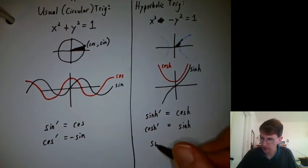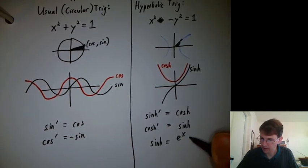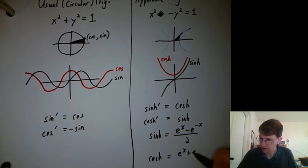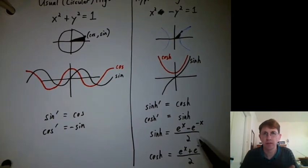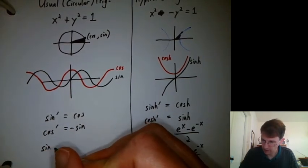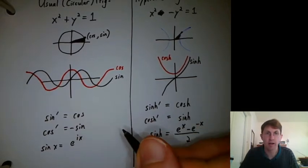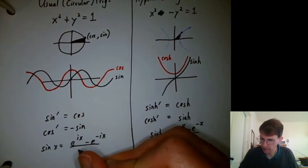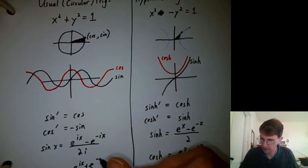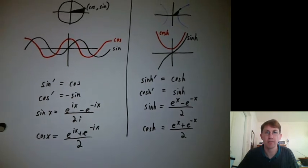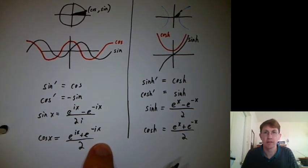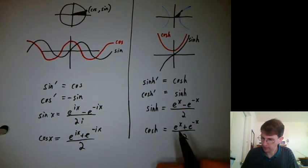Now it turns out there are nice formulas for cinch and cosh. Cinch is e to the x minus e to the minus x over two. And cosh is e to the x plus e to the minus x over two. You might be saying, if there's such nice formulas for cinch and cosh, why aren't there nice formulas for sine and cosine? It turns out there are. If you use a bit of imagination, sine x equals e to the i x, where i is the square root of negative one, minus e to the minus i x over two i. And cosine x is e to the i x plus e to the negative i x over two without the i. If you're okay using complex variables, you can use these as definitions for sine and cosine, and that makes some things a lot easier.